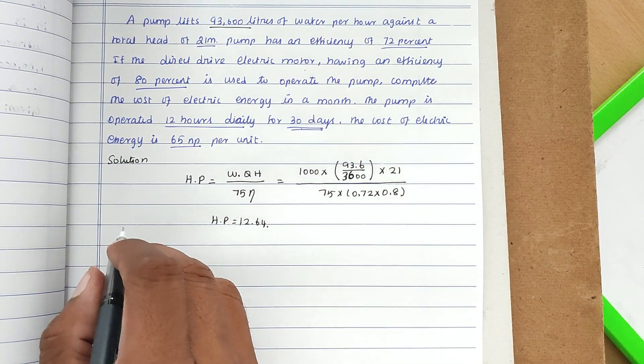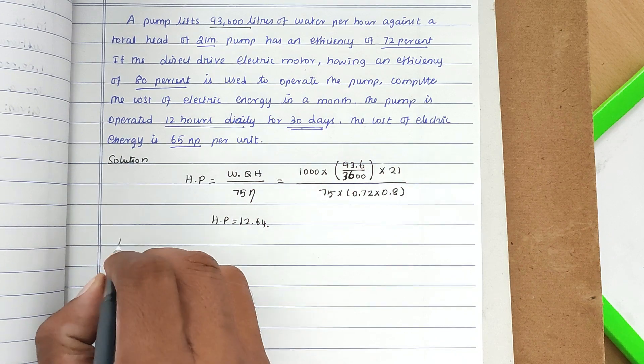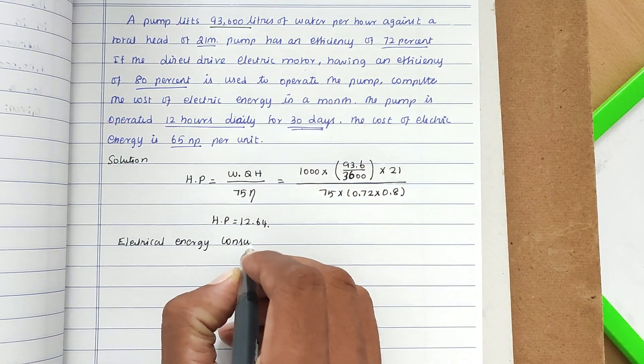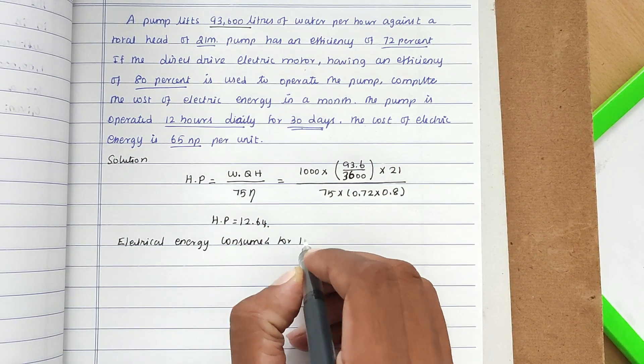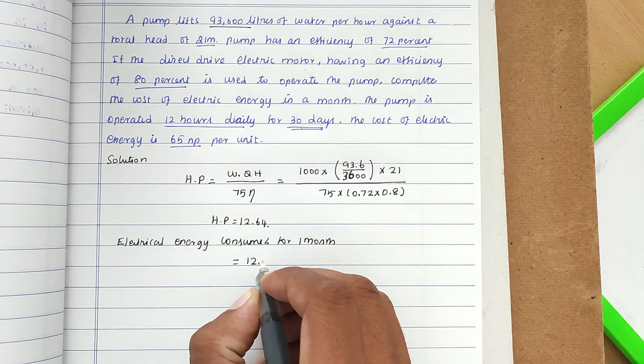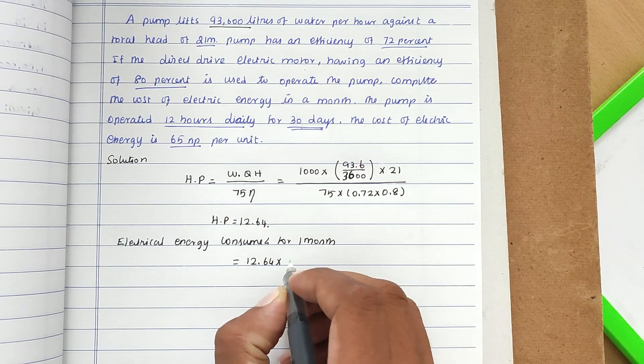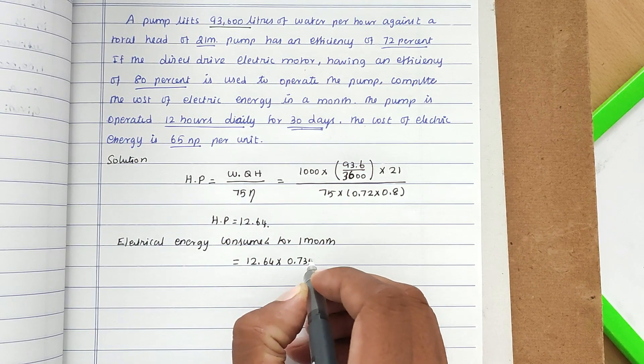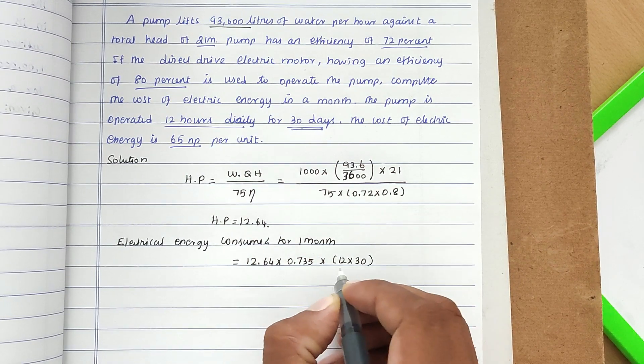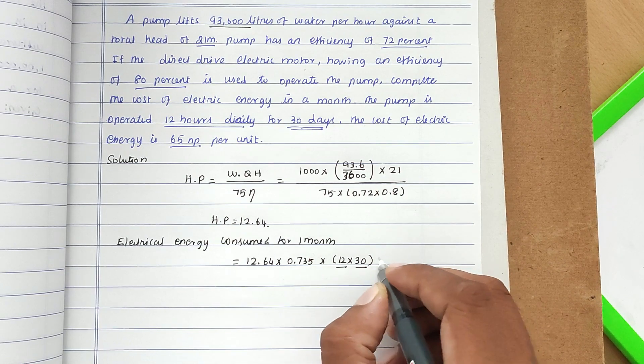Now the electrical energy consumed for one month: HP is 12.64 × 0.735 × 12 × 30. That's 12 hours and 30 days continuously running.